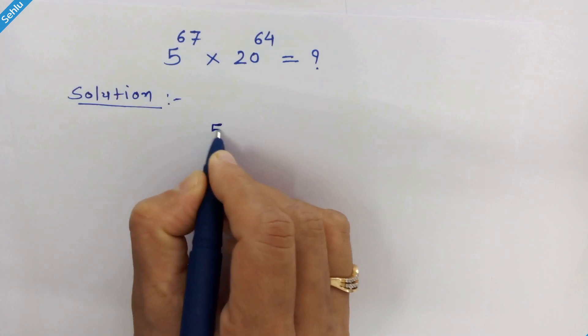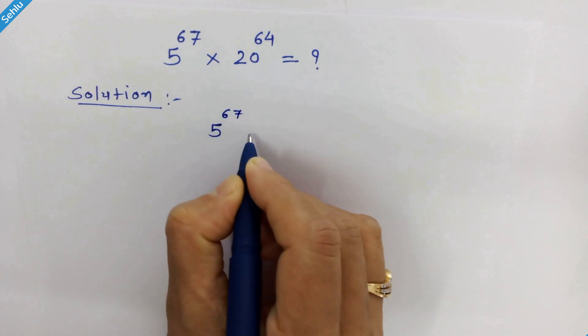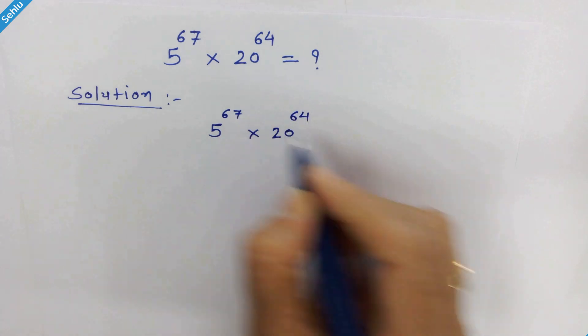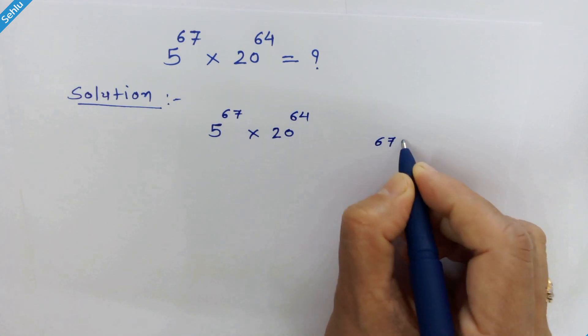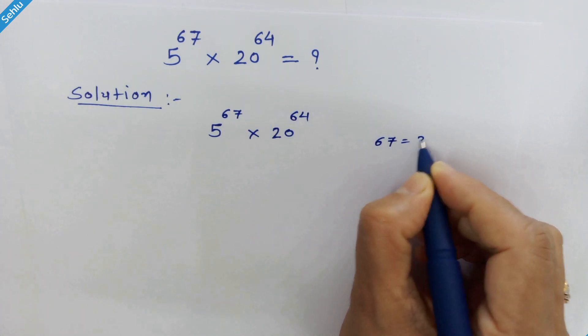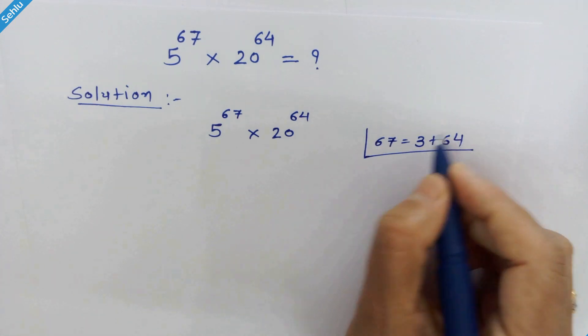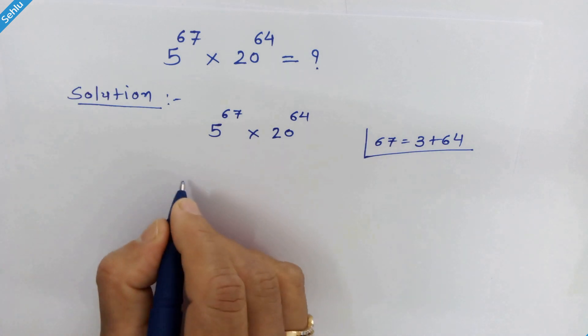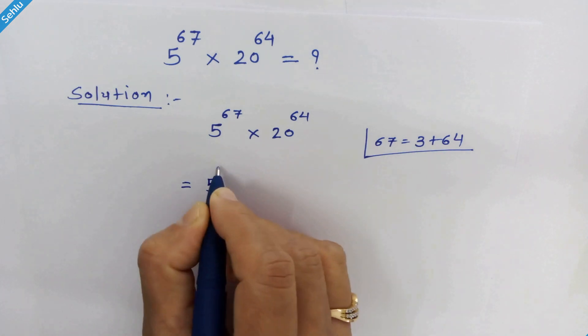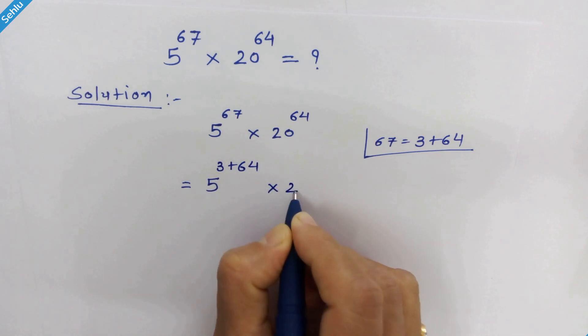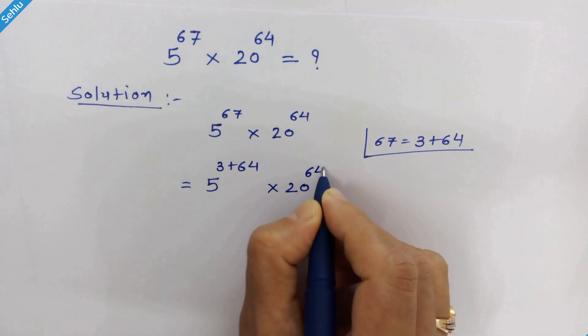So we have 5 raise to 67 times 20 raise to 64. This 67 can be written as 3 plus 64. Right? So we will put this in place of 67. 5 raise to 3 plus 64 times 20 raise to 64.